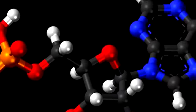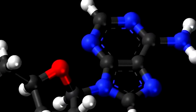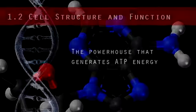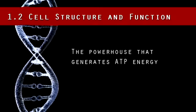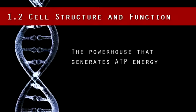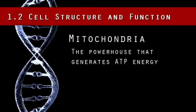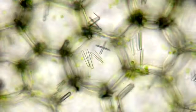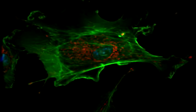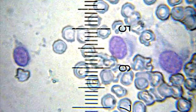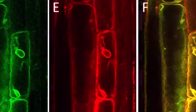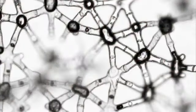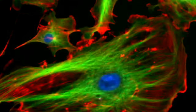Recall that all organisms need energy to do cellular processes. Do you remember which organelle is the powerhouse that generates ATP energy? That's right — it's the mitochondria. Many different types of plants and animal cells are grown and studied in biotechnology labs. Cells can be manipulated by pharmaceutical companies to produce proteins to treat diseases such as diabetes and anemia.